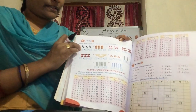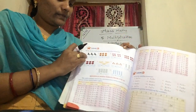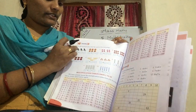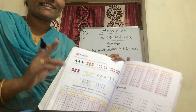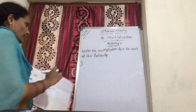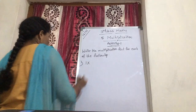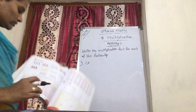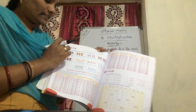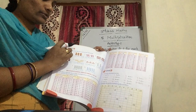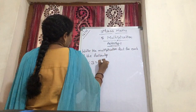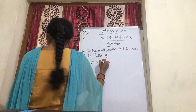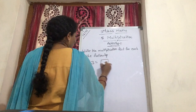Here, we are getting some parrots. Tell me, children — how many rows are there? Only a single row. So, 1 into... In each row, how many parrots are there? 1, 2, 3. So, 1 into 3. You get 3. 1 times 3 is 3. Okay?